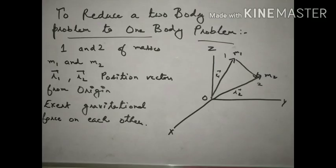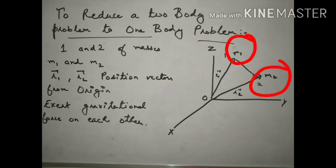The topic is to reduce a two-body problem into a one-body problem. Here we will consider two bodies, body 1 and body 2 with masses m1 and m2. The origin of the position vectors will be r1 and r2.